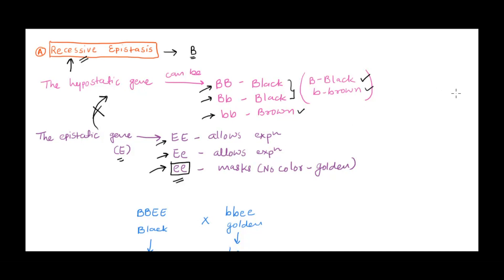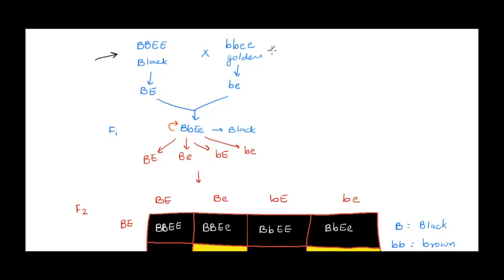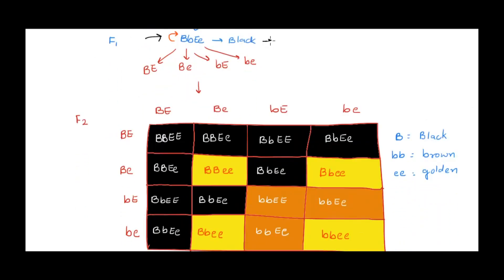Let's take an example with a Labrador with black pigmentation and one with golden pigmentation — golden meaning no black or brown pigment. When we cross them, in the F1 generation we get black pigmentation with genotype capital B small b capital E small e. Since the epistatic gene E is in dominant state, it does not block expression, so we get black pigmentation in F1.